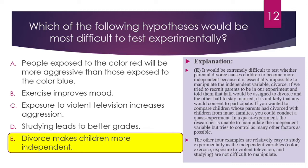If you wanted to compare children whose parents had divorced with children from intact families, you could conduct a quasi-experiment, where the researcher is unable to manipulate the independent variable but tries to control as many other factors as possible. The other four hypotheses — involving color, exercise, exposure to violent television, and studying — are relatively easy to study experimentally, as those independent variables are not difficult to manipulate.